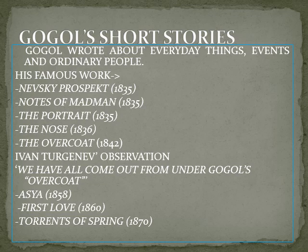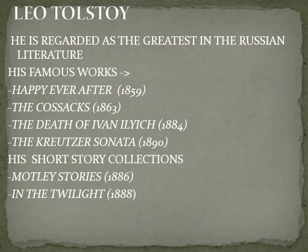The important works of Turgenev are Asia, 1858; First Love, 1860; and Torrents of Spring, 1870. The next Russian writer is Leo Tolstoy, regarded as the greatest in Russian literature. His famous works are Happy Ever After, 1859; The Cossacks, 1863; Death of Ivan Ilyich, 1884; and The Kreutzer Sonata, 1890. His short story collections are Motley Stories, 1886, and In the Twilight, 1888.